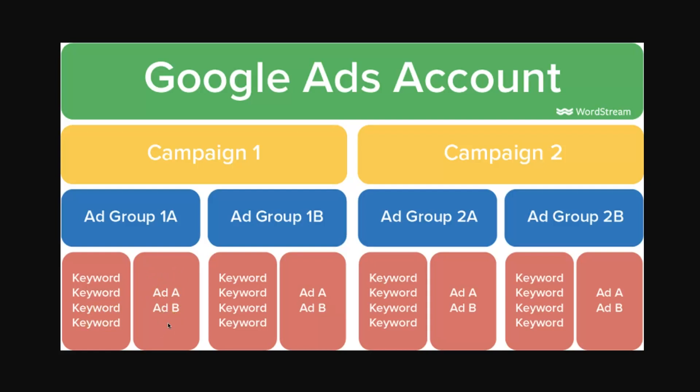When somebody sees your ad they feel like they're finding what they're looking for, which improves user experience, generates more business, and gives you a lower cost per click and cost per conversion. We'd have our Custom Closets ad group and our Closet Installation ad group, each with matching keywords and ads. Google really cares about user experience — if people stop clicking ads, Google loses opportunities to make money, so relevance is rewarded.